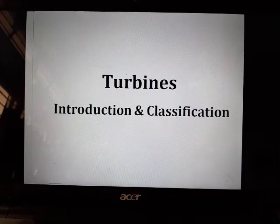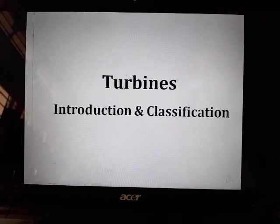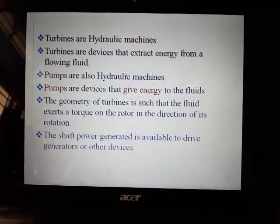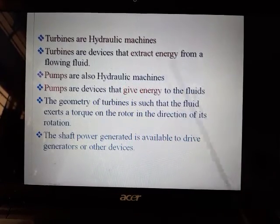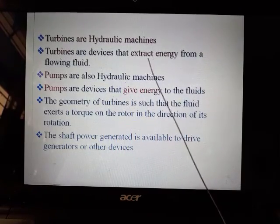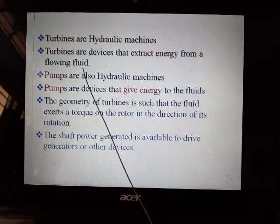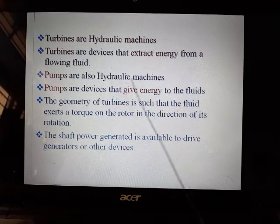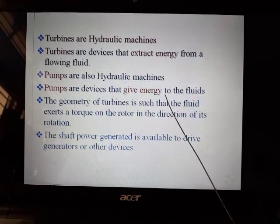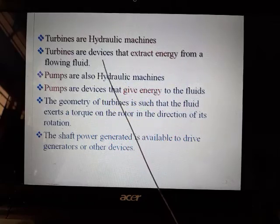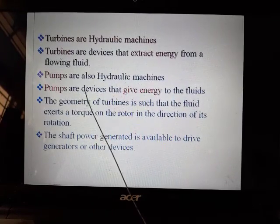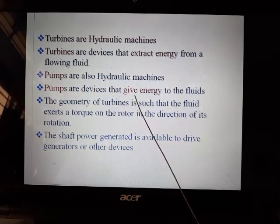We'll be starting with turbines — what they are and their classifications. Turbines are hydraulic machines; they are devices that extract energy from flowing fluid. Pumps are also hydraulic machines, but pumps are devices that give energy to the fluid. Turbines take energy from the flowing liquid, whereas pumps pass energy to the fluids.